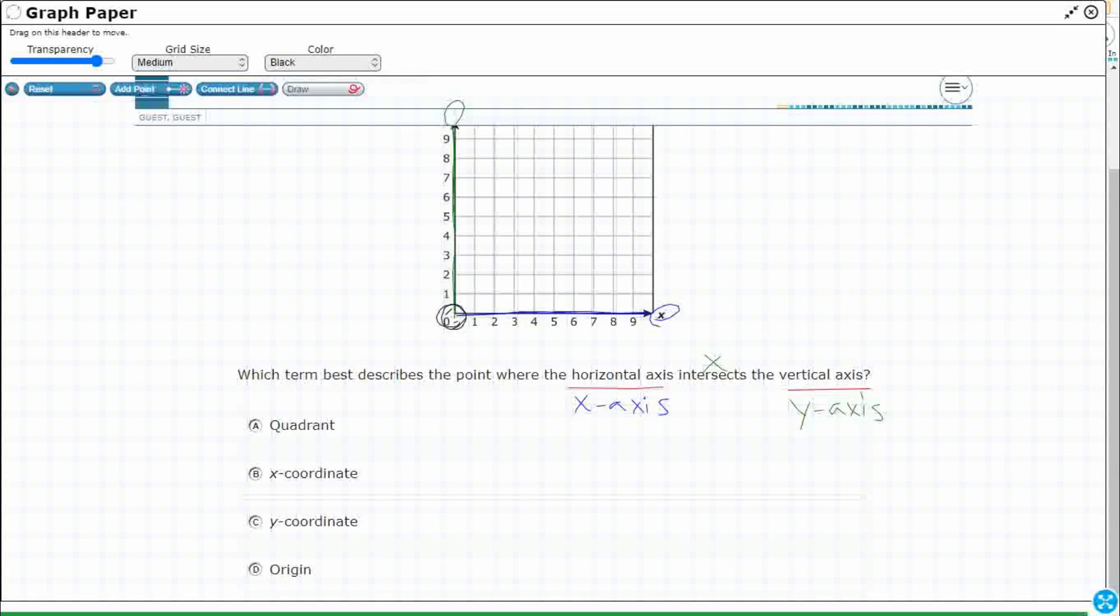So if you were to label this spot, you would label it zero, zero. Okay, so is it called quadrant, x-coordinate, y-coordinate, or origin?